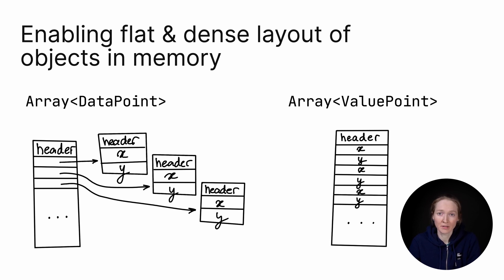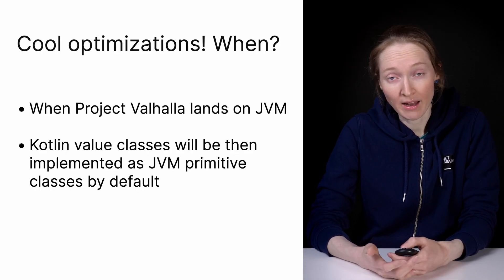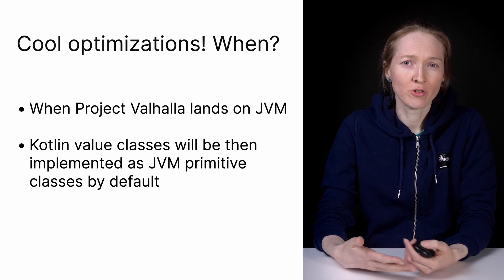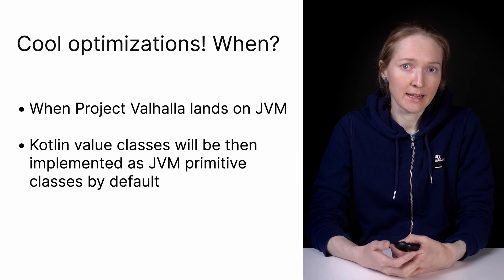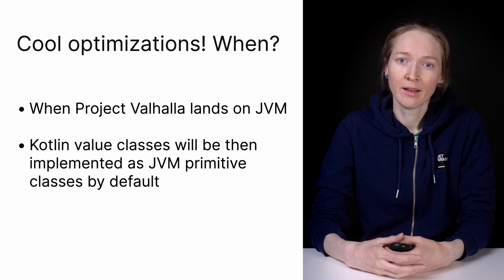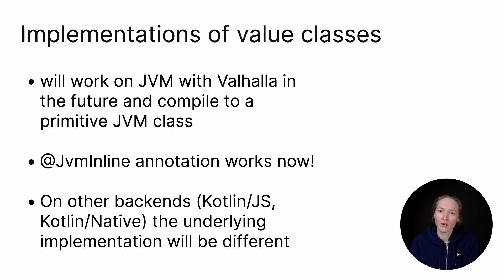One of the main reasons to support this new concept on JVM is to enable flat and dense layout of objects in memory. An array of reference types is always an array of references. That leads to the practice of defining two different arrays of primitive values to store both coordinates x and y in performance-critical parts of code. Project Valhalla addresses that by introducing primitive classes. JVM will be able to optimize storage for value classes and flatten that. When? When Project Valhalla lands on JVM. We are anticipating this upcoming JVM change and want to benefit from it in Kotlin. When it happens, value classes will be implemented as JVM primitive classes under the hood by default.